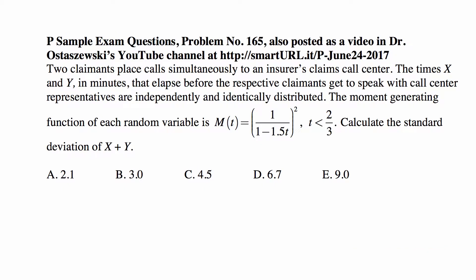Here's a problem that we will work on today. Two claimants place calls simultaneously to an insurance claims call center. The times X and Y in minutes that elapse before the respective claimants get to speak with call center representatives are independent and identically distributed. The moment generating function of each variable is M(t) = 1/(1-1.5t)^2 for t < 2/3. Calculate the standard deviation of X + Y.